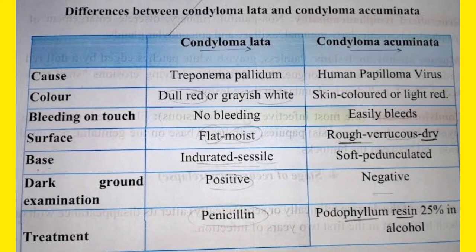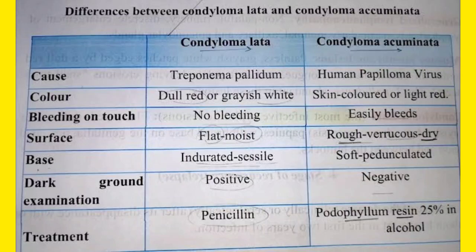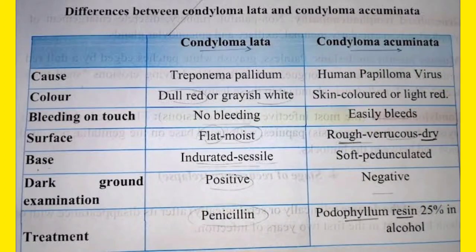Condyloma accumulata has a rough top, just like the top of a cauliflower. Condyloma lata, on the other hand, has flat lesions that are moist in nature. Remember: condyloma lata, associated with syphilis, has flat, moist lesions.